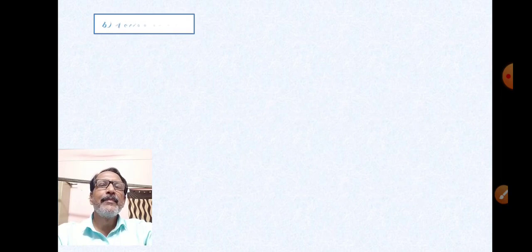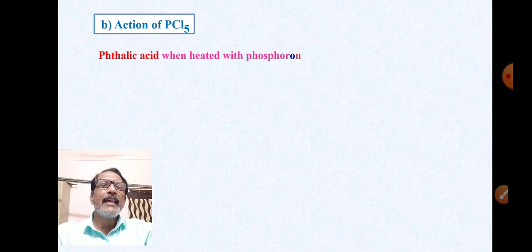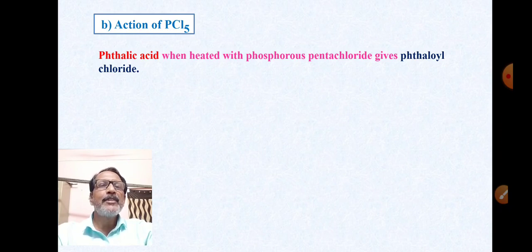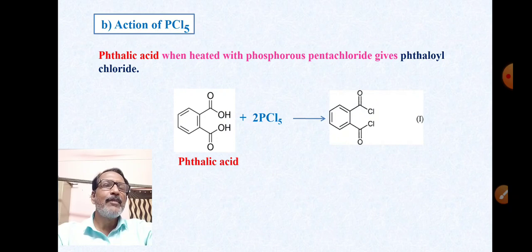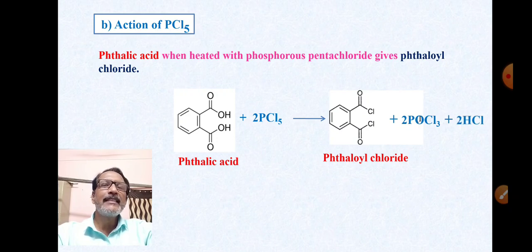The second reaction is action of phosphorus pentachloride. When phthalic acid is heated with phosphorus pentachloride (PCl5), it gives phthaloyl chloride, with the formation of phosphoryl chloride (POCl3) and hydrochloric acid as byproducts.